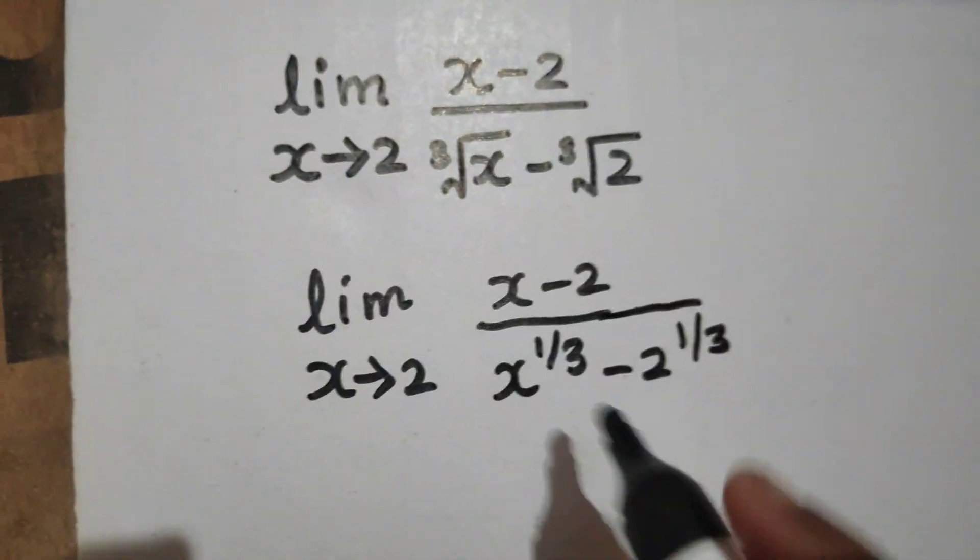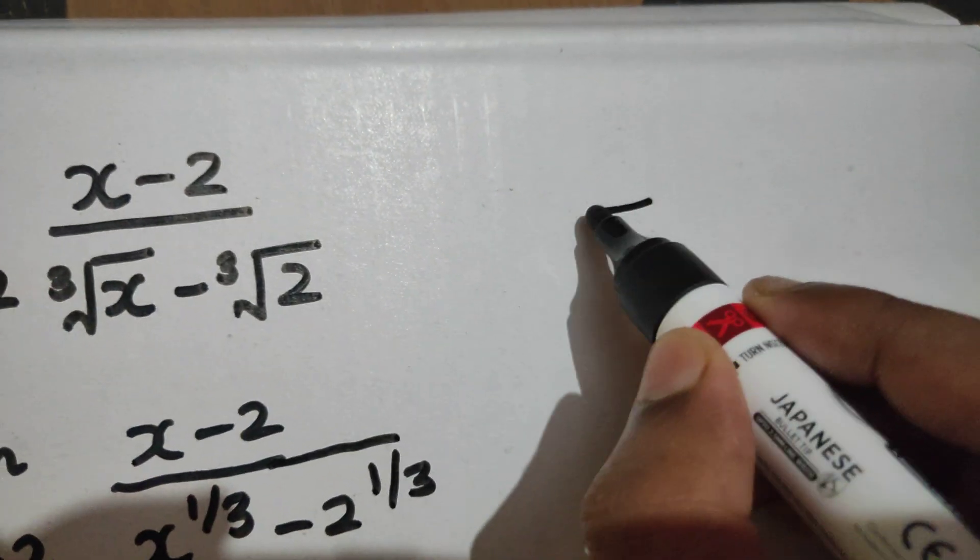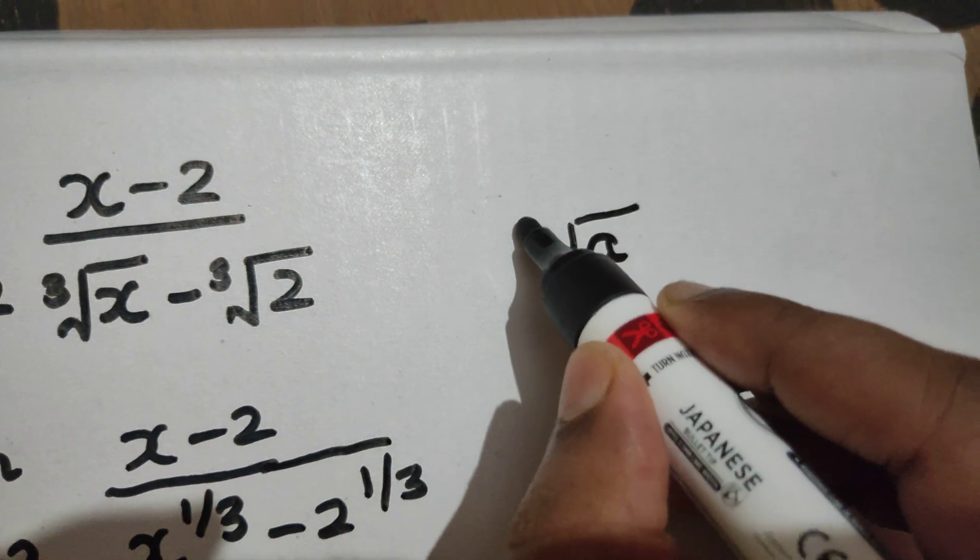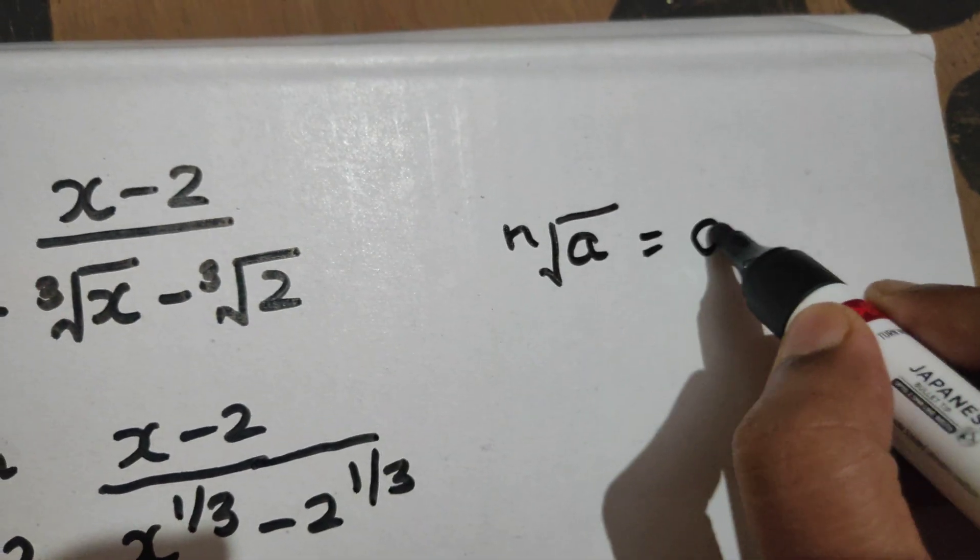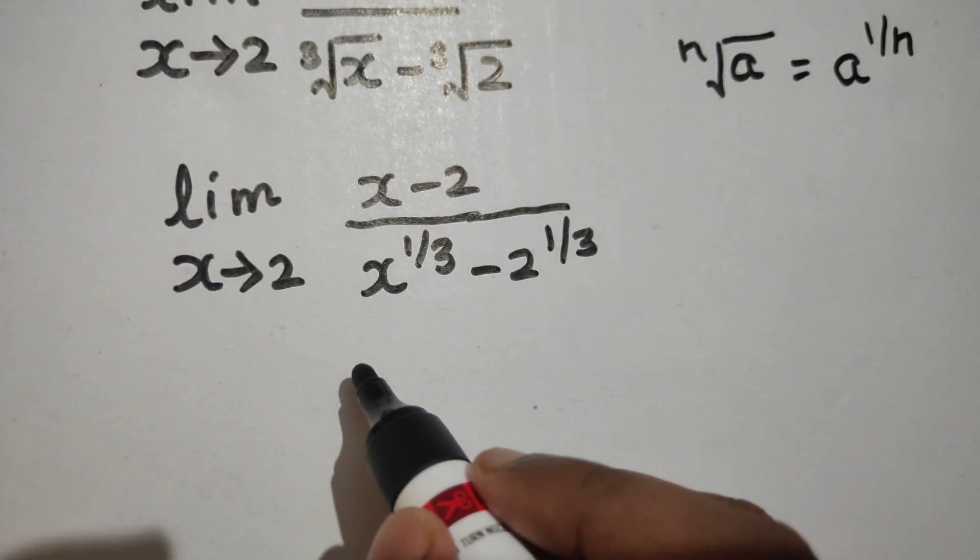Because nth root of x is x power 1 by n. That means if you have nth root of a, this can be written as a power 1 by n. I have used the same thing.